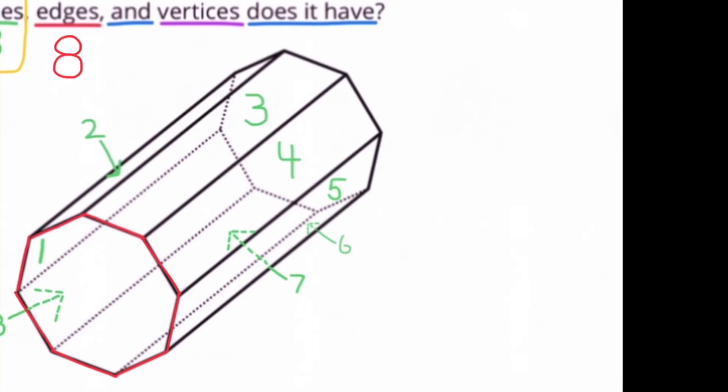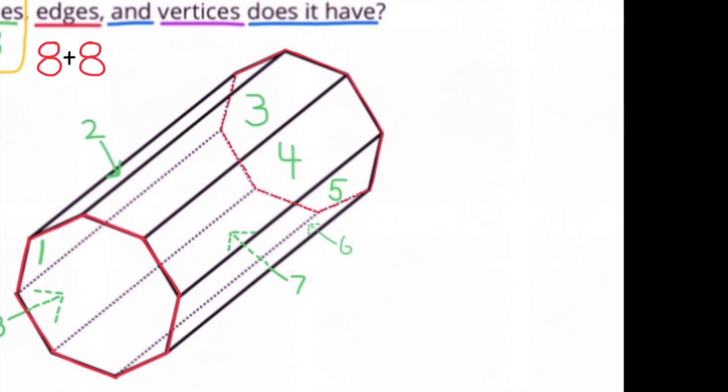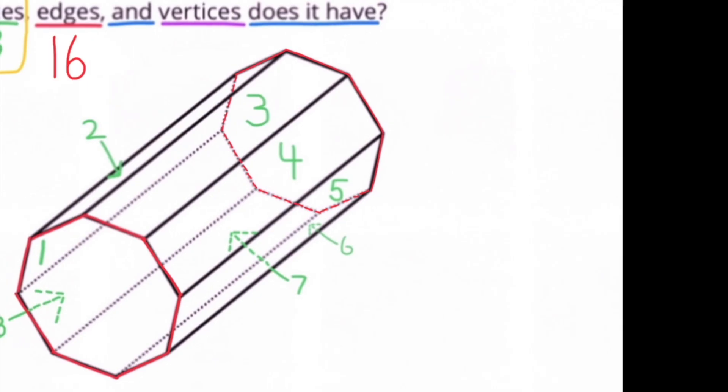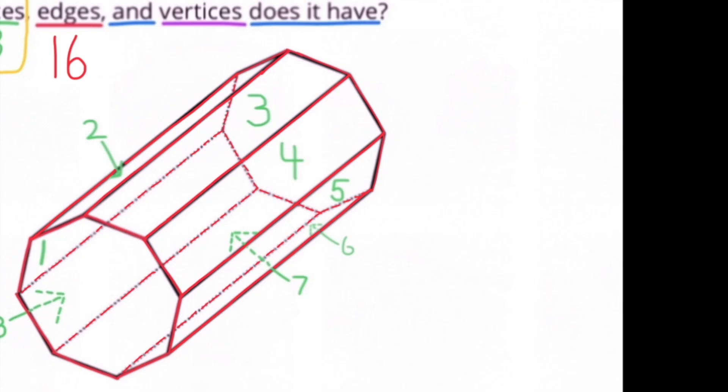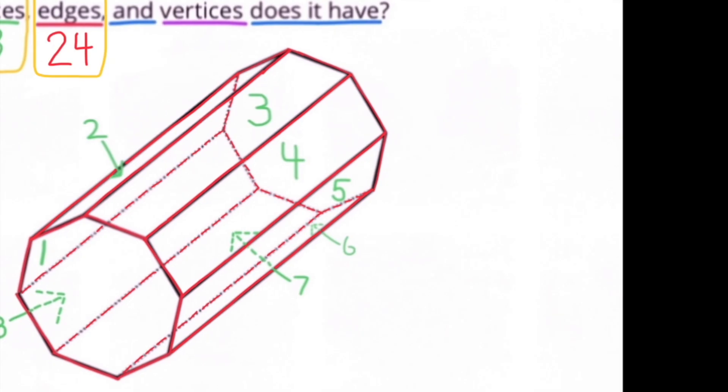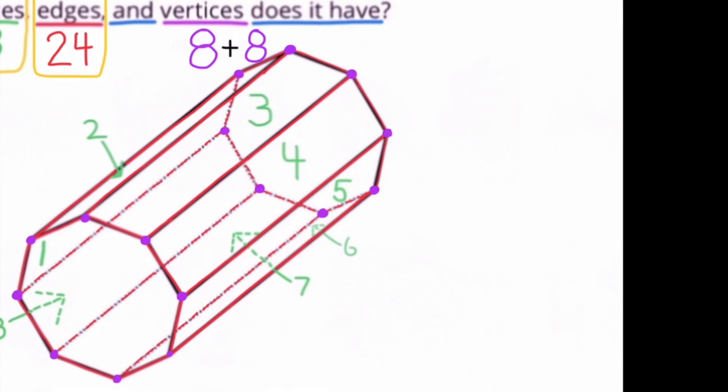Plus there's another 8 edges that run between each of the 8 faces, so there's a total of 24 edges. Now let's count the vertices: There's a total of 8 vertices on base 1 and a total of 8 vertices on base 2, for a total of 16 vertices altogether.